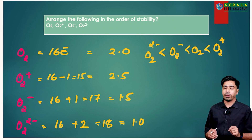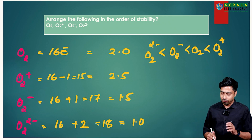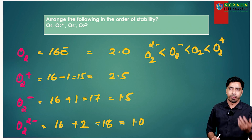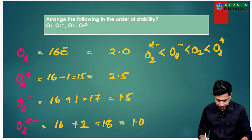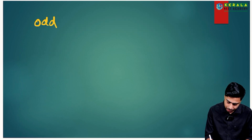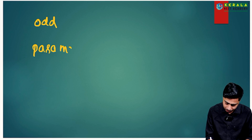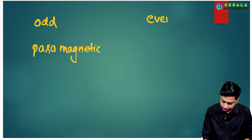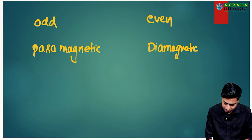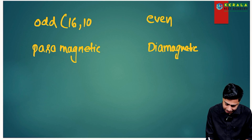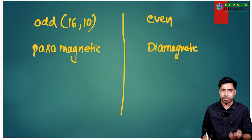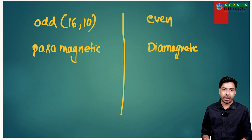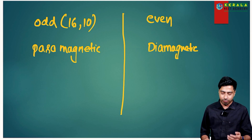Here's a shortcut for magnetic behavior: if the total number of electrons is odd, the molecule is paramagnetic. If even, it is diamagnetic — with exceptions: 16 and 10 electrons are also paramagnetic despite being even numbers. So: all odd numbers plus 16 and 10 are paramagnetic; all other even numbers are diamagnetic.